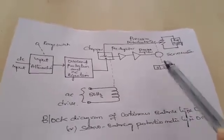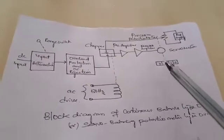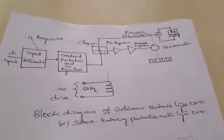This is about the block diagram of continuous balance type DVM or servo balancing potentiometer type DVM.